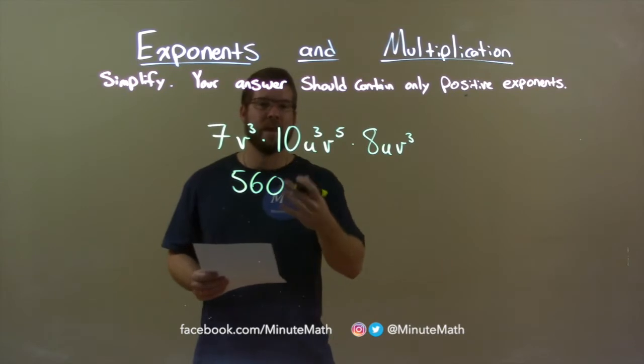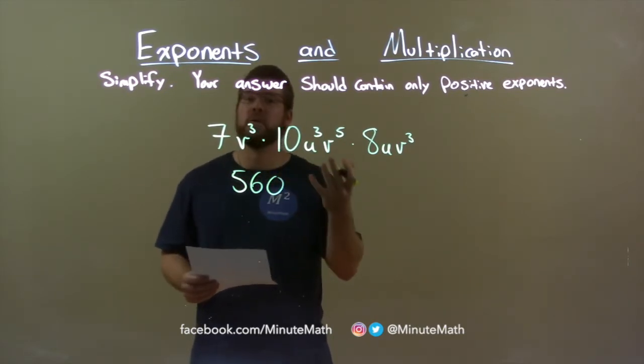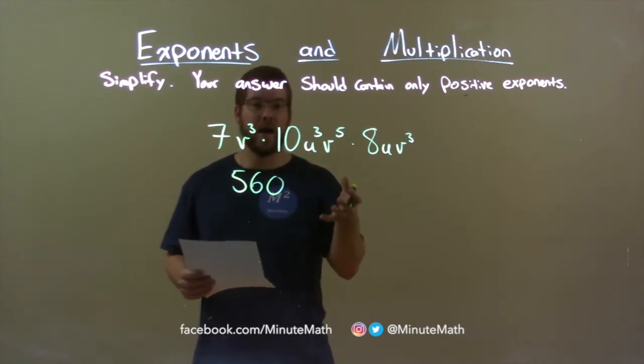So let's look at the next variable, v. v can only be combined with other v's and we're multiplying them. All we have to do is add the exponents.